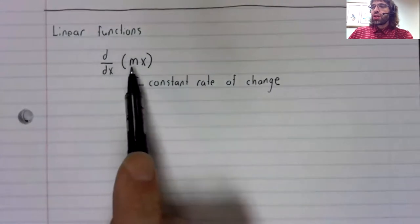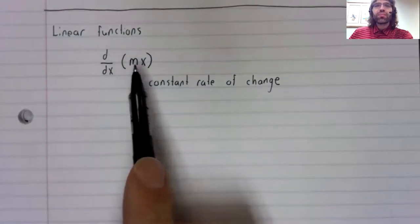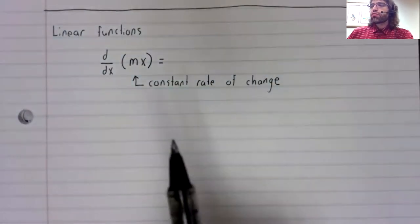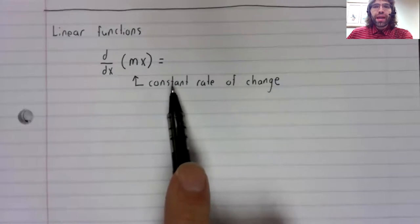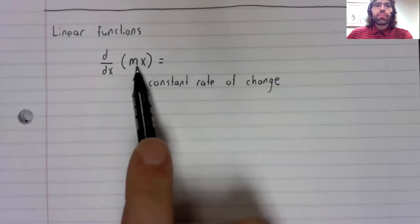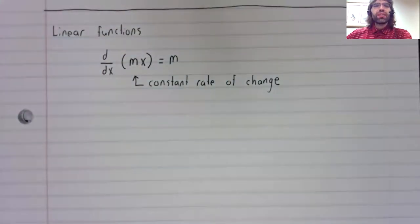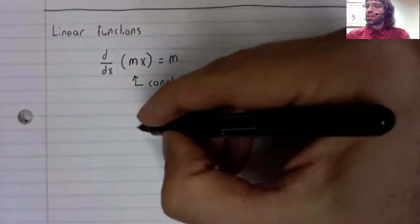This coefficient in front of the x is the constant rate of change. So if the derivative is the instantaneous rate of change, and the rate of change is always m, it surely makes sense that the derivative of m times x ought to be m. And indeed it is.